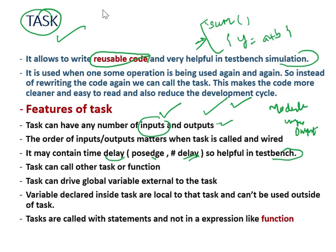From inside a task, you can call another task or another function. Tasks can also drive global variables external to the task. Variables declared inside a task are called local variables, and variables outside the task are called global variables. A variable not declared inside the task cannot be used outside of the task.